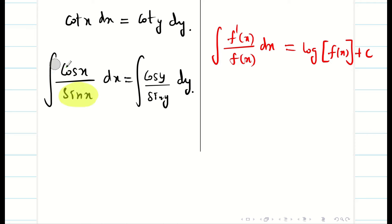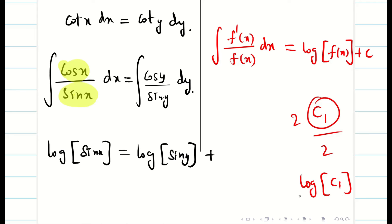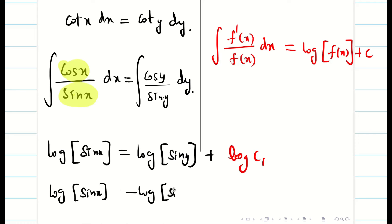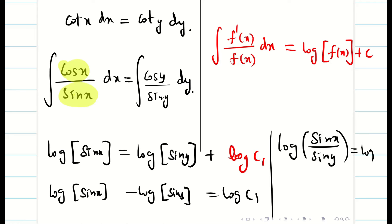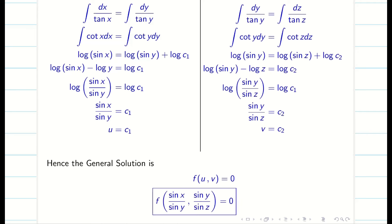Since the differentiation of sin(x) is cos(x), we get log|sin(x)| = log|sin(y)| + constant. For simplification, we take the constant as log(c₁), so log|sin(x)| − log|sin(y)| = log(c₁). Using log(a) − log(b) = log(a/b), we get log(sin(x)/sin(y)) = log(c₁), and cancelling log gives u = sin(x)/sin(y). Similarly for the second and third ratios we get v = sin(y)/sin(z). The general solution is f(sin(x)/sin(y), sin(y)/sin(z)) = 0.